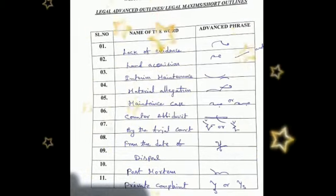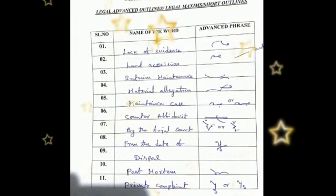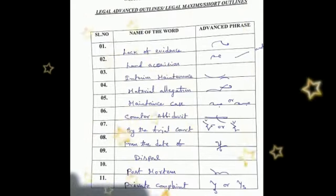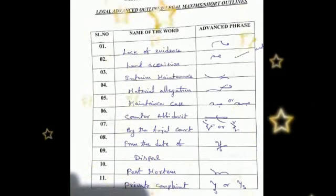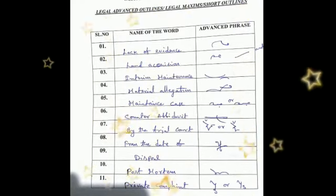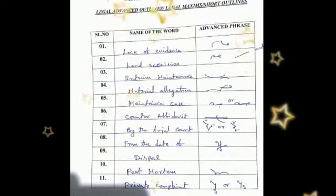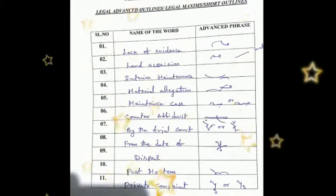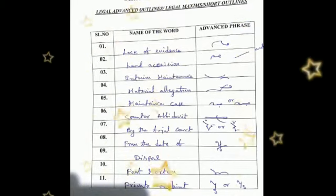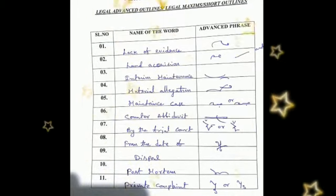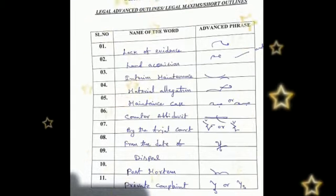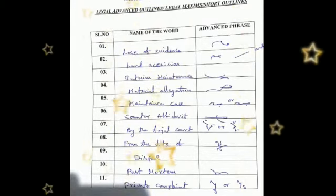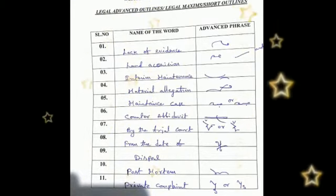The next word is 'land acquisition.' The outline of the word is L half above the line, N hook, then K, then write a small circle, and attach a small hook written on the opposite side to the circle with the same motion.